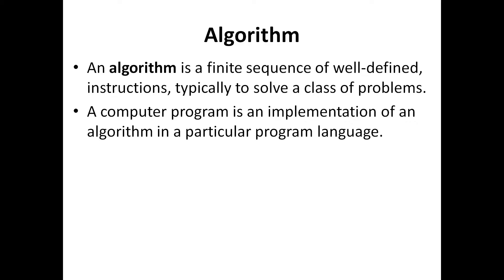The difference between a program and an algorithm is that once the algorithm is properly written, thoroughly checked for any mistakes, and guaranteed to produce the correct results, it can be converted into any programming language of the choice of the programmer. You can translate an algorithm into Java, C, or C++ depending upon your knowledge of the language or the requirement. A program is an expression of an algorithm in a particular programming language.